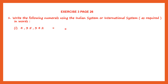First one, we have the Indian system. Now how do we know it's the Indian system? When you look at the commas, you can make out the Indian system. You will have the first three places and then after every two places you have the commas. This is how it is in the Indian system. Now if you have to read this or write this in words, we have to know the places and the periods. So let's go through the places.